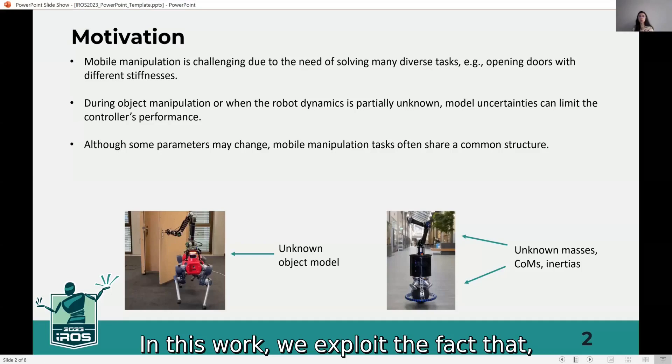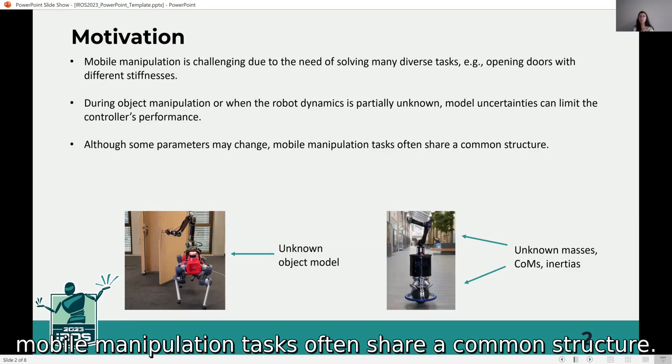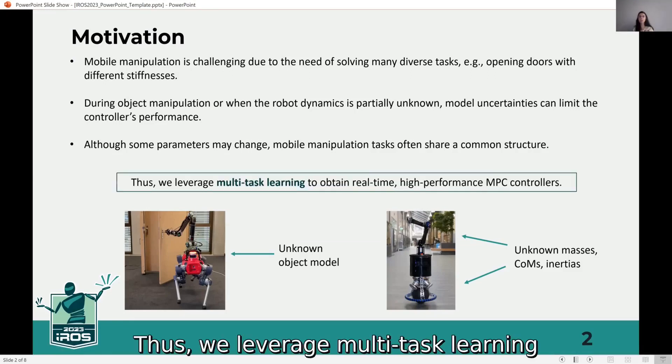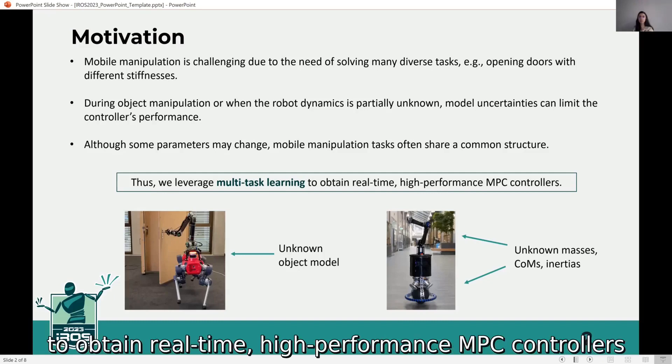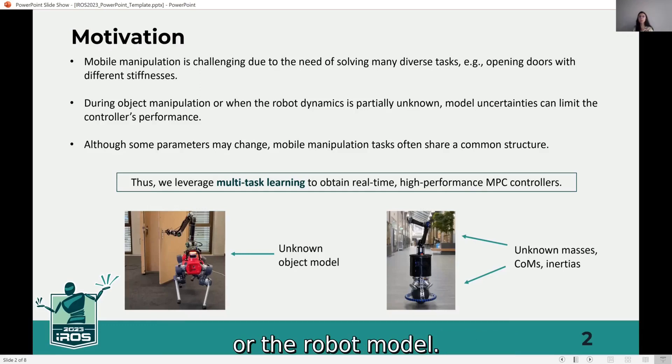In this work, we explored the fact that although some parameters may change, mobile manipulation tasks often share a common structure. Thus, we leverage multi-task learning to obtain real-time, high-performance MPC controllers in the presence of uncertainties affecting either the object model or the robot model.